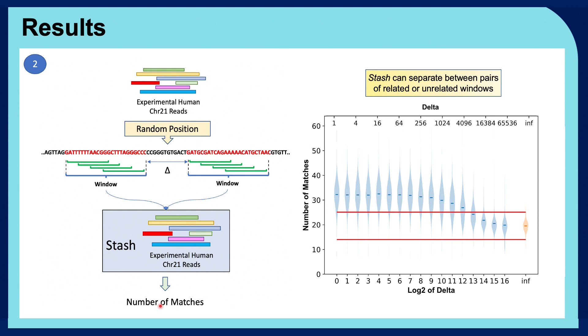By repeating this whole process several times, we get to a distribution of the number of matches. And in this plot, we can see that when we increase the delta value, which is the distance between two windows, the number of matches distributions get closer to the one of unrelated windows, which have a distance of infinity with each other.